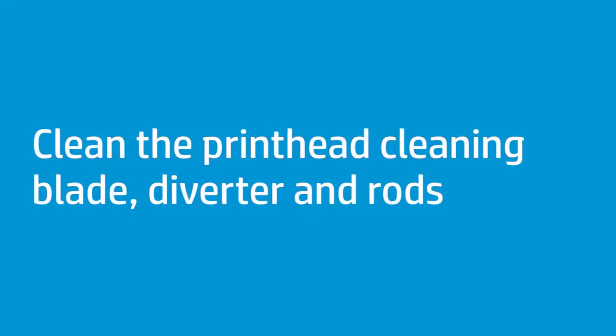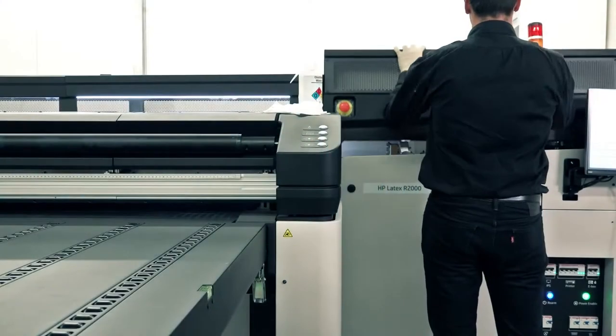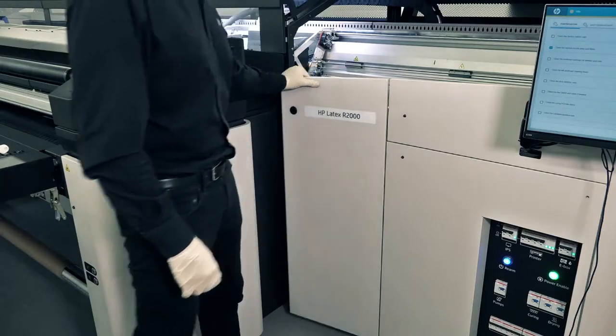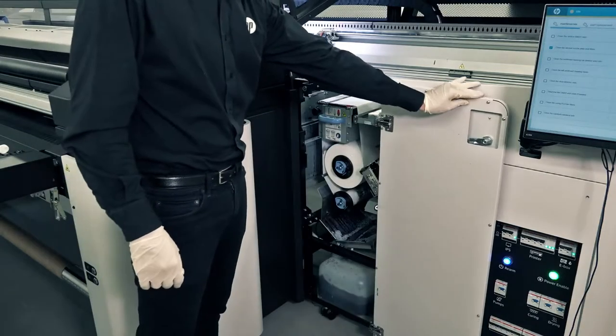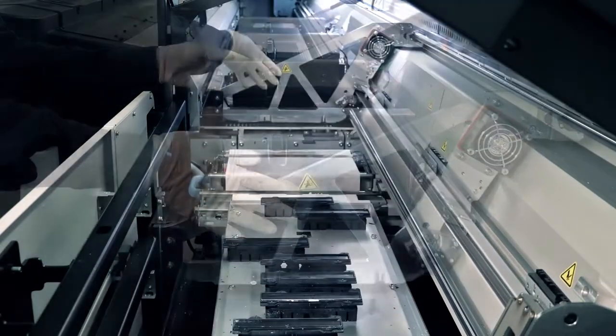Follow these steps to clean the printhead cleaning blade, diverter and rods. Open the carriage cover and then open the printhead cleaning roll door. Manually move the carriage all the way to the left.